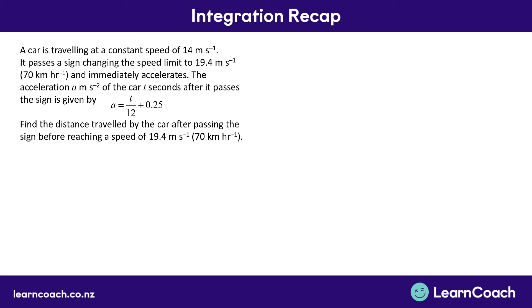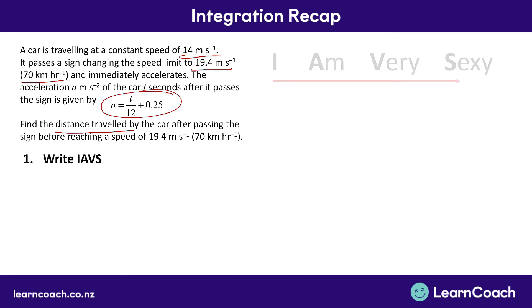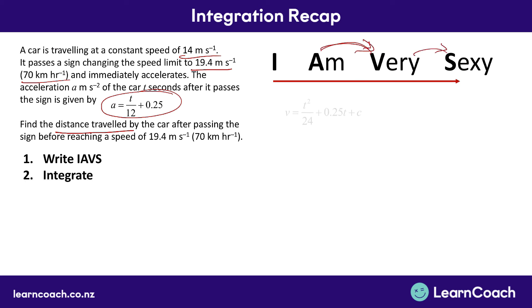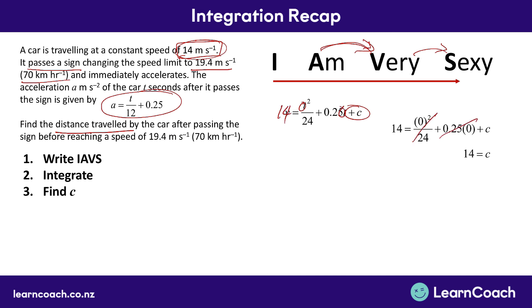A car is traveling at 14 meters per second. It passes a sign and speeds up to 19.4 meters per second, which is 70 kph. We have a formula for the acceleration of the car and need to find the distance traveled after it passes the sign. Our first step is to integrate from acceleration to velocity. Integrating the acceleration term gives velocity equals t squared over 24 plus 0.25t plus C. We always remember the plus C — because we know the velocity at time 0 is 14 meters per second, we substitute t equals 0 and v equals 14, so all other terms cancel and C equals 14.